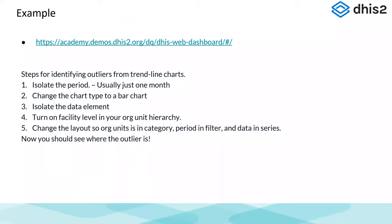Before we get into the predictor stuff, let's do a quick overview of how to identify outliers on a standard dashboard and isolate the actual outlier. We have some steps for this. The first step is to isolate the period — we just want to drill into one month. Then we change the chart type to a bar chart. Then we isolate the data element. Then we isolate the facility level to see where the data is coming from. Finally, we change the layout so that org units is a category, periods in filter, and data is in series.